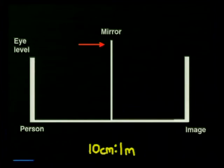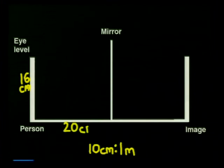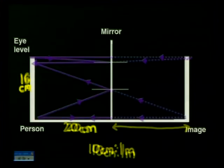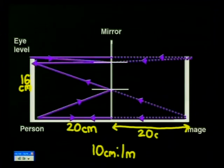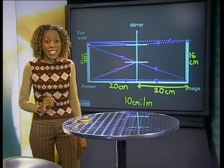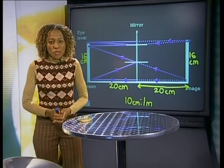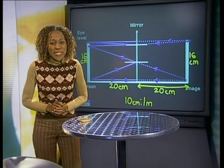Here we have a line that represents the mirror, and here is the person. If the person is 1.6 m tall, my figure should be 16 cm tall. And remember, we said the person stood 2 m away from the mirror, so we have to ensure that we place our figure 20 cm away from the mirror. You should notice that the image forms 20 cm behind the mirror and is 16 cm tall. That means that the image of the person forms the same distance behind the mirror as the person is standing in front of the mirror, and that the image of the person is the same size.